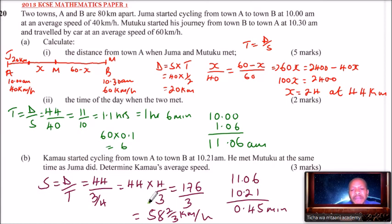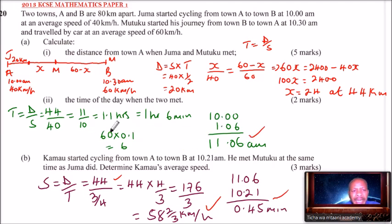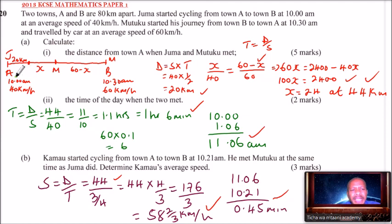When using decimals, remember you have approximated. The exact speed is 58 and 2/3 km/h. That's how you work out this problem and get the three marks. Remember, a diagram will assist you a lot because you'll be able to see what operations are taking place. That is how you solve this type of problem. Thank you for watching.